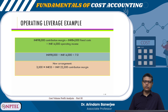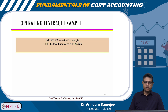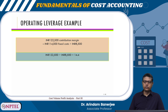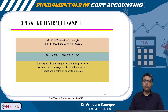Under the new arrangement, 3,500 × ₹35 = ₹1,22,500 contribution margin. Minus ₹1,14,000 fixed cost gives a profit of ₹8,500. So the operating leverage is ₹1,22,500 divided by ₹8,500, which equals 14.4. The degree of operating leverage at a given level of sales helps managers calculate the effect of fluctuations in sales on operating income.